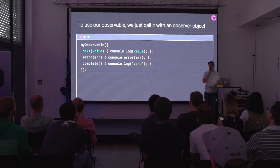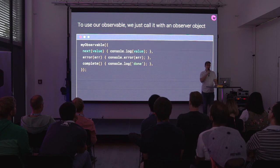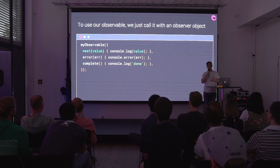To use this observable, we're just going to pass in a plain old object with a next, error, and complete handler. This function is designed to set up something that's going to produce data — calling next every time it has data, complete if it's done, or error if there's a problem. The function can also return a teardown function we can call to tear down whatever's producing data.